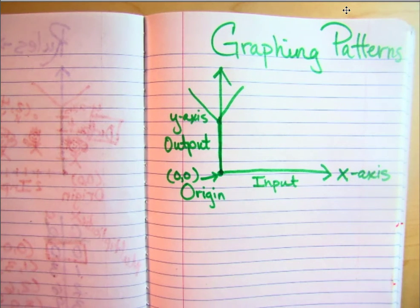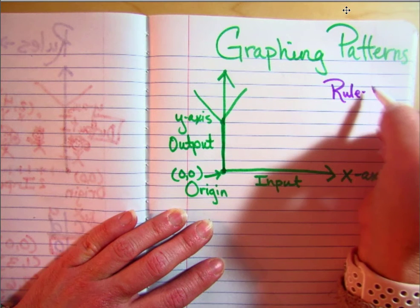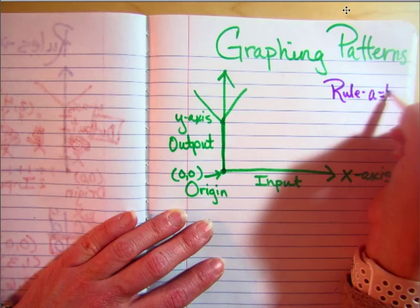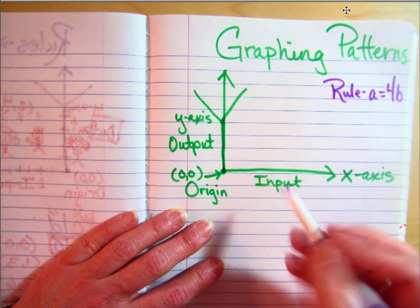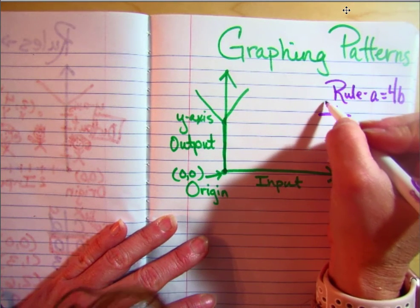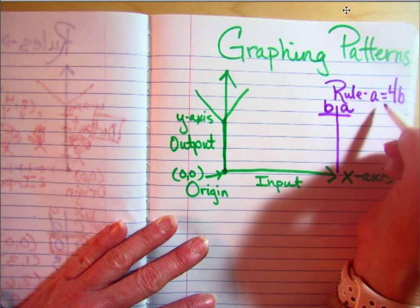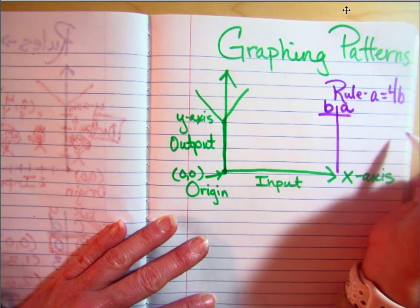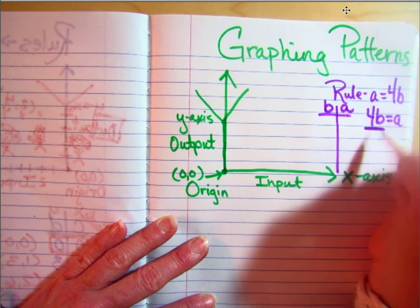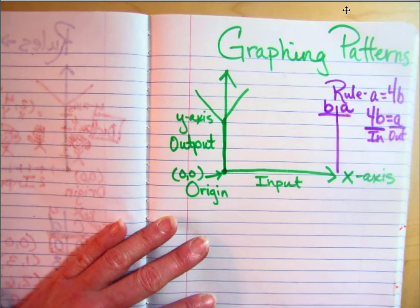the rule might say A equals 4 times B. The first thing you're going to do is make your little t-chart. B is what we're changing; A is what we're getting. Just because they write it this way doesn't mean you switch the letters around. I usually have kids rewrite it so your input is on this side and your output is on this side, and that way you won't get mixed up.